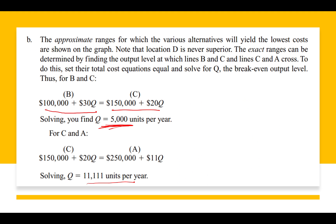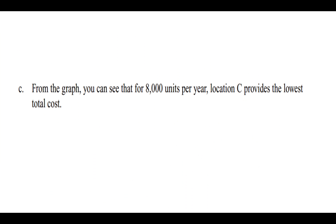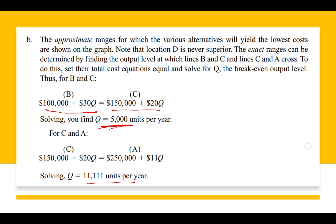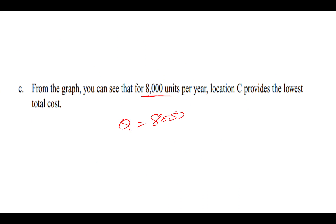For the last part, if Q equals 8,000 units, we look at which range 8,000 falls into. Since 8,000 falls in the range of 5,000 to 11,111, we can say that at Q = 8,000, location C is going to be the superior location.